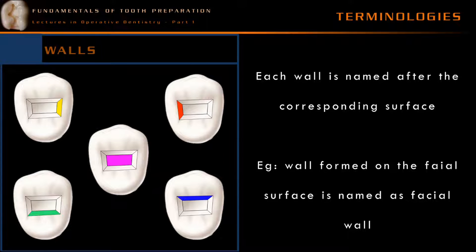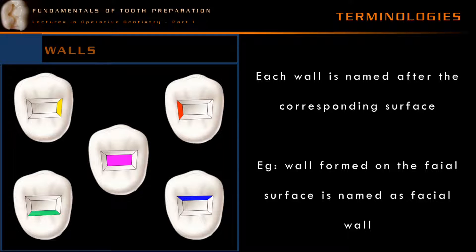Many walls are formed during cavity preparation or tooth preparation, and each wall is named after the corresponding surface. For example, the wall that is facing towards the facial surface is named the facial wall. Similarly, the lingual wall, the mesial wall, and the distal wall are named after each representative surface. The floor of the tooth preparation is always represented as a pulpal floor, and occasionally it could be mentioned as a pulpal wall also.